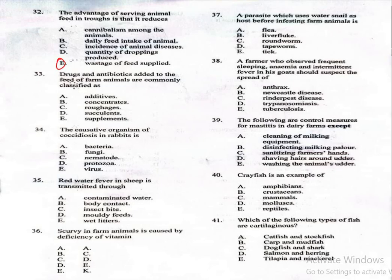Question 33: Drugs and antibiotics added to the feed of farm animals are commonly classified as: A, additives; B, concentrates; D, succulents; E, supplements. The correct answer is option E, which is supplements. Supplements include drugs, antibiotics, vitamins, and minerals added to enhance animal health and productivity.